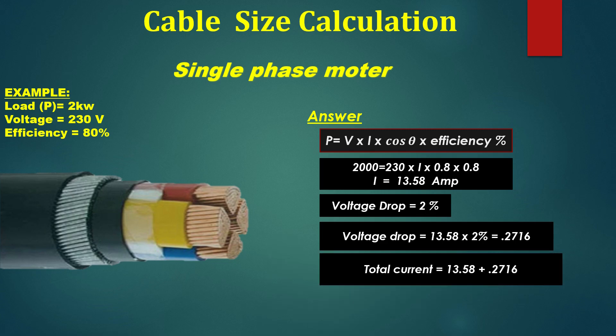Now, this 0.2716 plus to total current. The answer is total current is equal to 13.85 ampere.